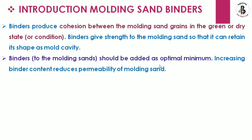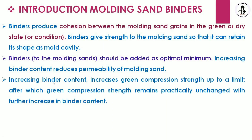Binders should be added at an optimum minimum amount, because increasing binder content reduces the permeability of the molding sand. As per requirements, the correct concentration is added to achieve better accuracy. Increasing binder content increases green compression strength up to a limit, after which green compression strength remains practically unchanged with further increases.